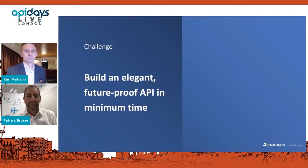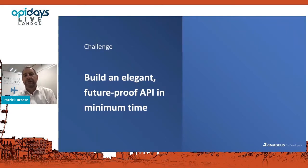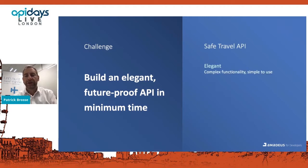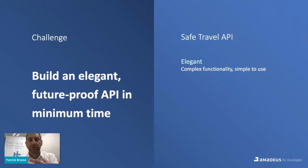Audio is clear again — sincere apologies for the interruption. Patrick resumes: let's restart. What does it mean to be elegant, future-proof, in a minimum of time? Let's take an example of an API recently designed for the Amadeus Safe Travel Widget, which was quite useful for travel agencies, airlines, hotels, and providers helping to double-check health documents or health passes associated with their customers or guests.